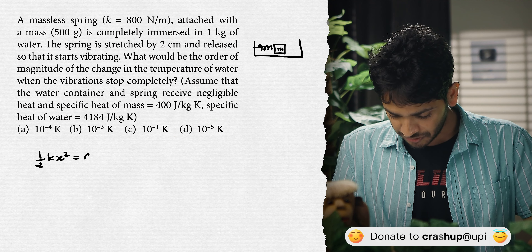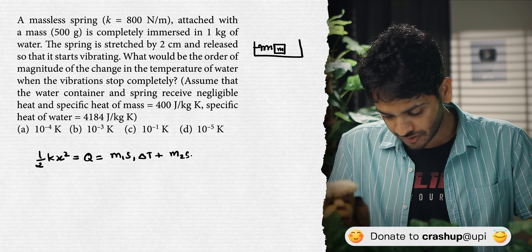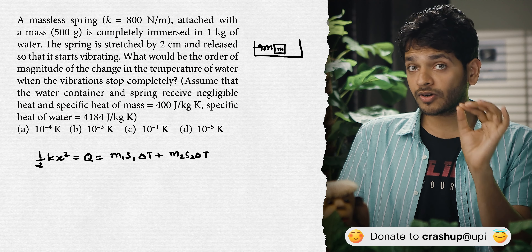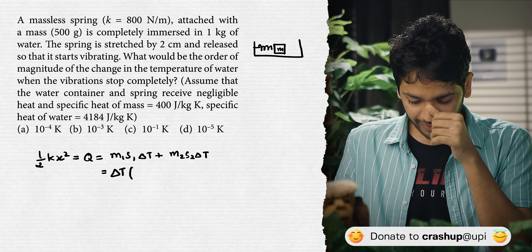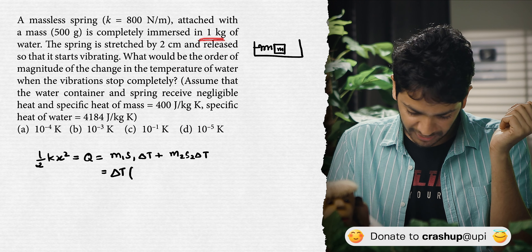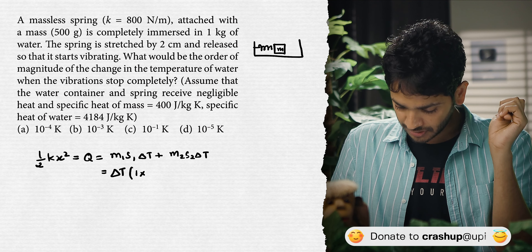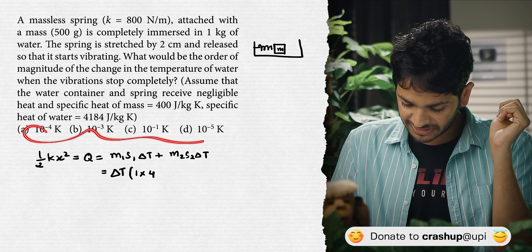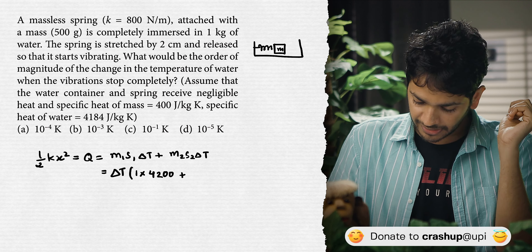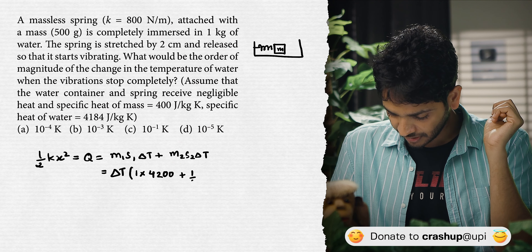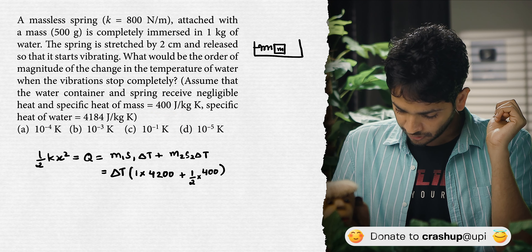For this question, the correct answer is option D. Solving: half kx² = Q = m₁s₁∆T + m₂s₂∆T. Important point: both must reach thermal equilibrium, so ∆T is the same for both and can be factored out. m₁ = mass of water = 1 kg, specific heat of water in SI units = 4200 J/kg·K. Plus m₂ = 0.5 kg (mass of block).